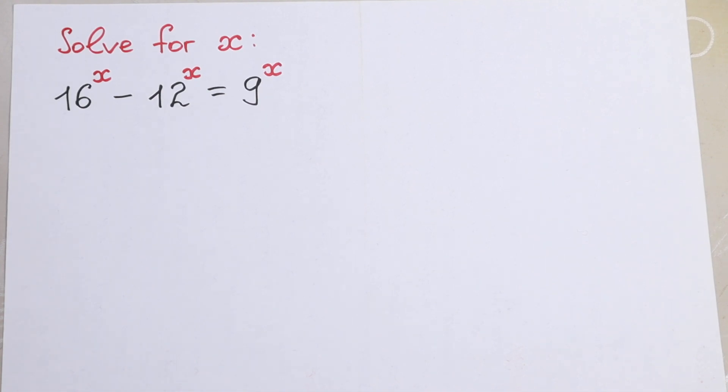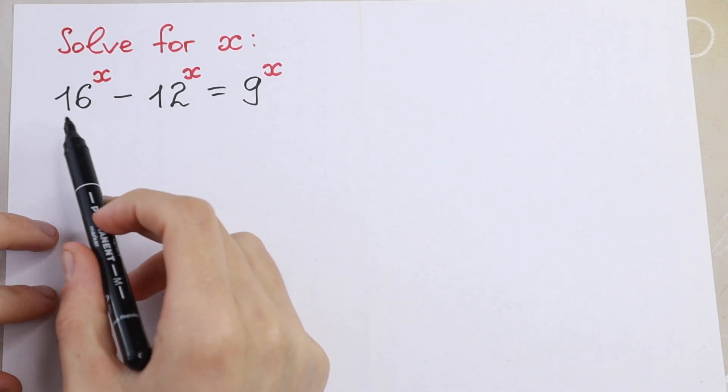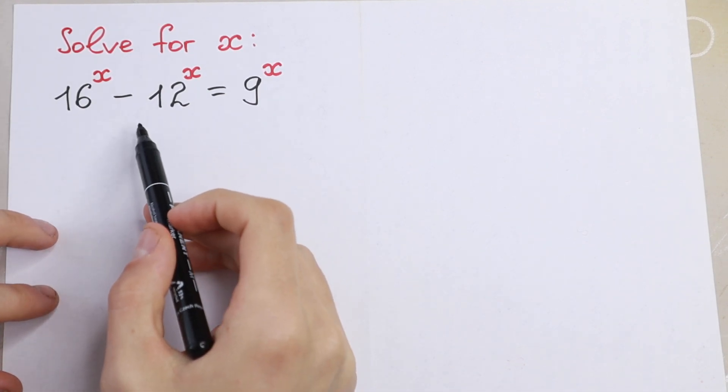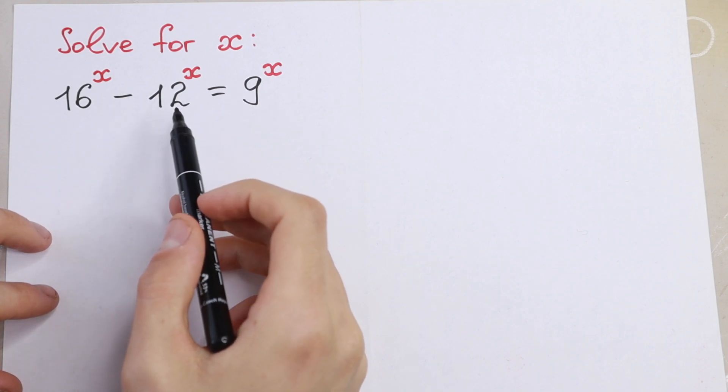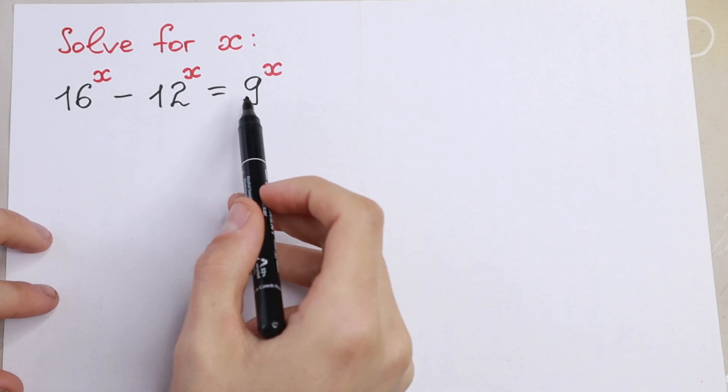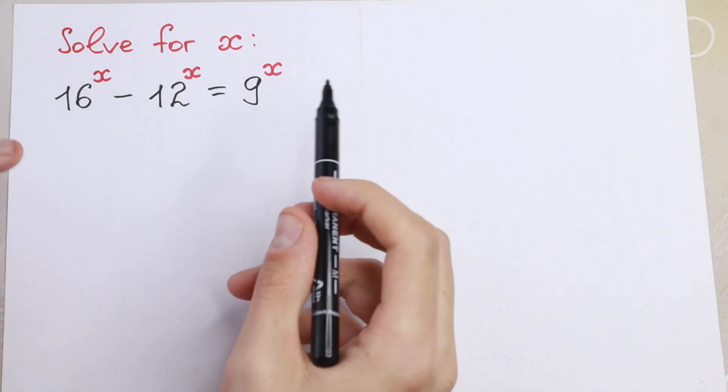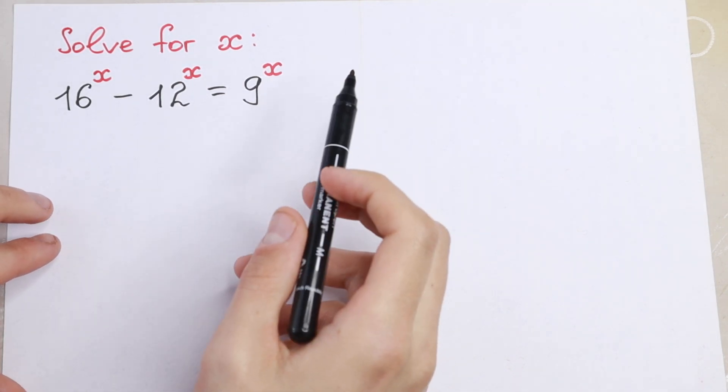Hello everyone! Interesting exponential equation today. We have 16 to the power x minus 12 to the power x equal to 9 to the power x.